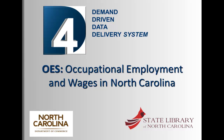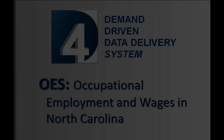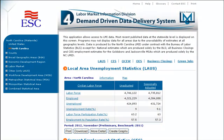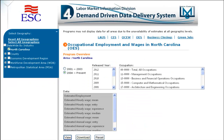Welcome to the OES section of the D4 tutorial. The Occupational Employment Statistics program consists of the results of a survey of employers to produce estimates of occupational employment and wages on employees in non-farm establishments. Access the program page by clicking OES in blue at the top of the screen or by selecting the more detail button below the OES program data table on the main page. This Bureau of Labor Statistics program is contracted by the state of North Carolina.